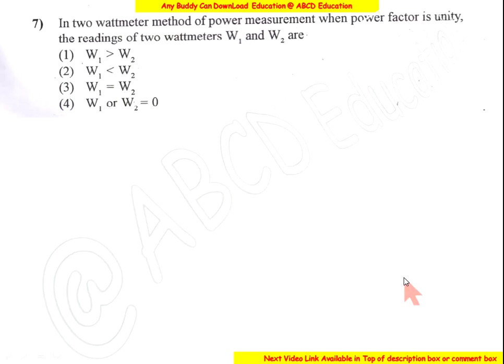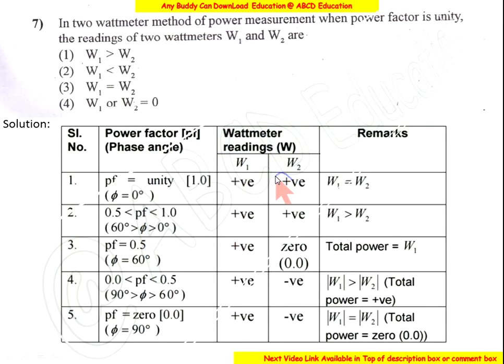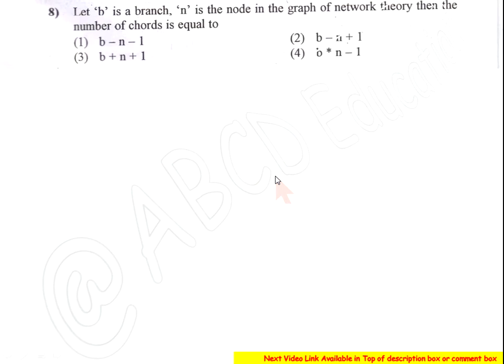In the two-watt-meter method, when the power factor is unity, the readings of the two watt meters W1 and W2 are both positive and equal to each other. Different power factor values give different readings. So the answer is option 3.